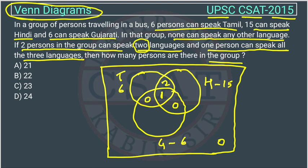The total Tamil speakers are 6. Since 2 plus 1 equals 3 are already inside the intersections, the outer region — those who can speak only Tamil — will be 3. Similarly, for Hindi, 3 are inside intersections, so those speaking only Hindi will be 15 minus 3 equals 12. For Gujarati, 6 minus 1 already counted gives 5 speaking only Gujarati.